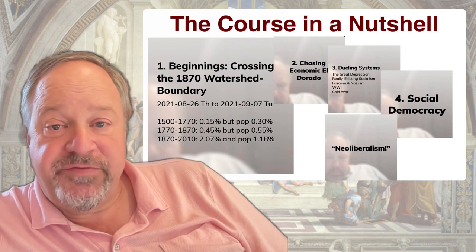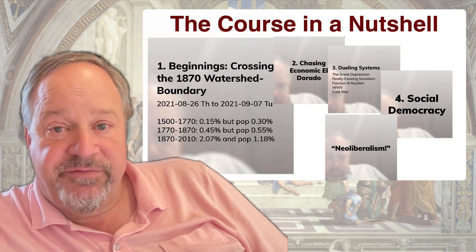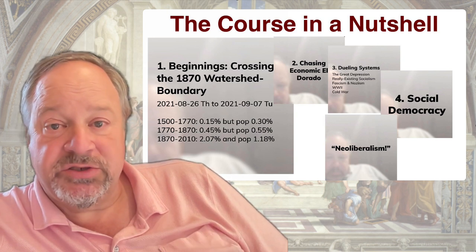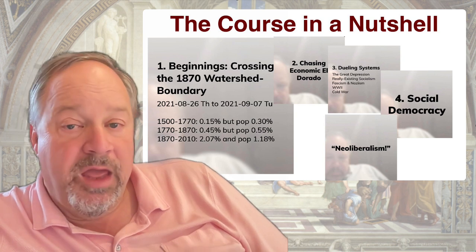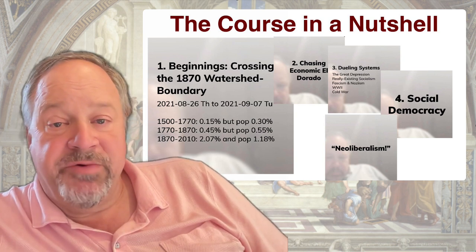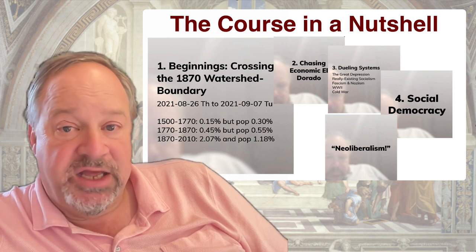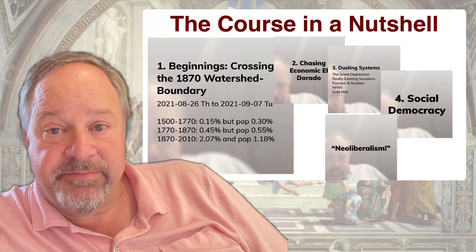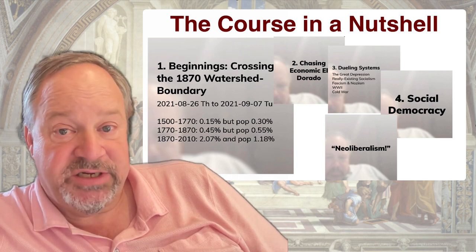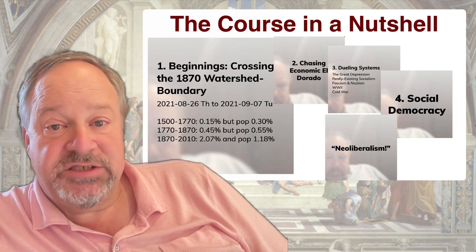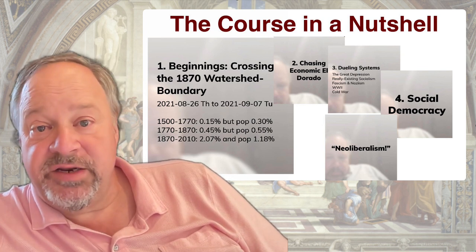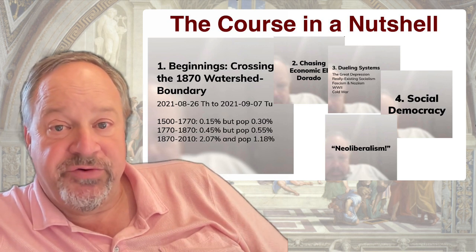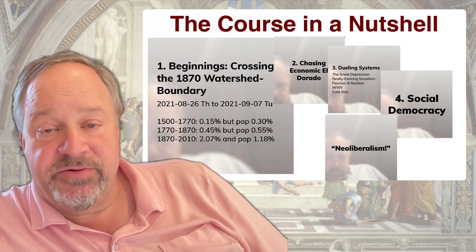After 1945, the Global North at least settled into an institutional configuration that we call social democracy — market economies, yes, but regulated by democratic polities as well. The market economy, as regulated by democratic policies, has a great deal of progressive taxation and income redistribution to soften the edges of inequality, and leads the market system to do more than simply satisfy the desires of a few rich with everyone else doing catch as catch can.